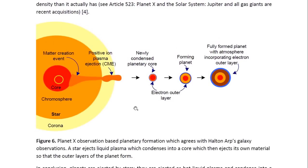And this diagram illustrates Planet X formation according to the Planet X observation. So what we have, we have the core of a star, which has too much energy, becomes unstable, and goes through a matter creation event. In other words, it creates matter, which is in the form of liquid, positive ion plasma. It ejects the matter.